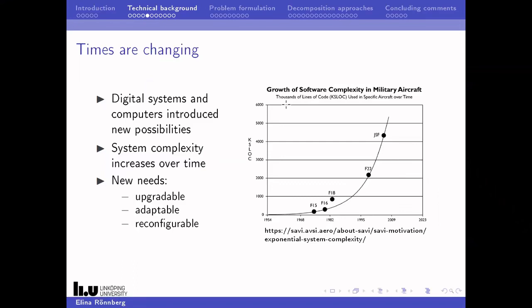Nowadays, with digital systems and computers, we have new possibilities. I found a graph showing the number of thousands of lines of code used in specific aircraft over time — it shows US military aircraft, but curves for commercial aircraft look the same. You can see that system complexity has increased enormously over time. Together with this, there is a new need to be able to upgrade and reconfigure the system.